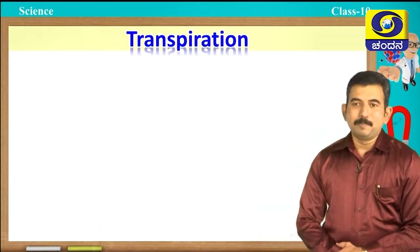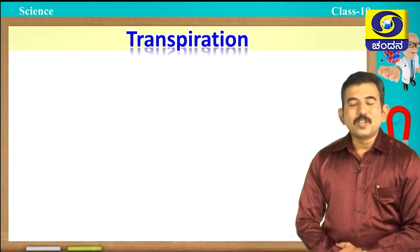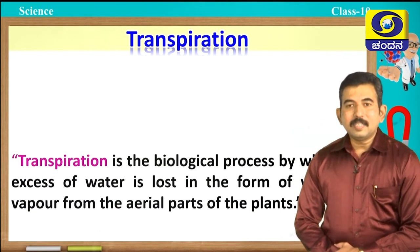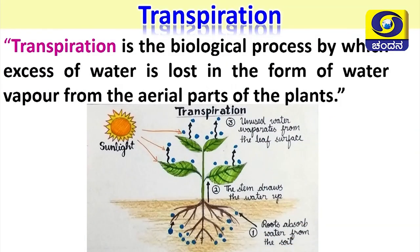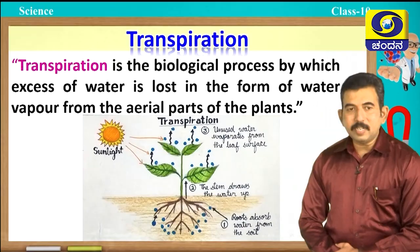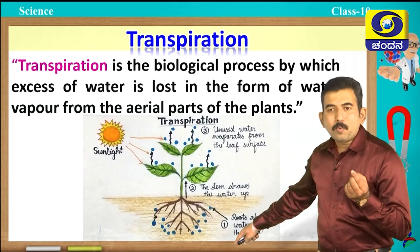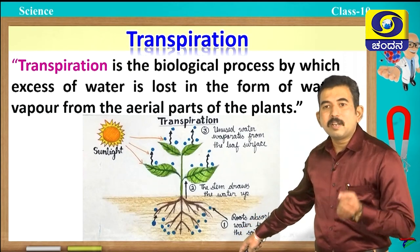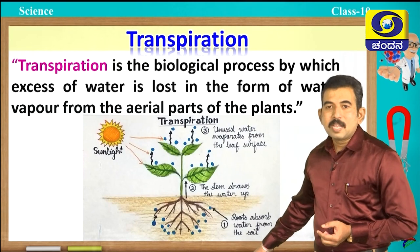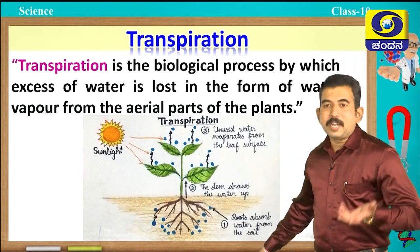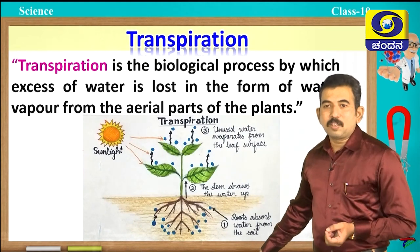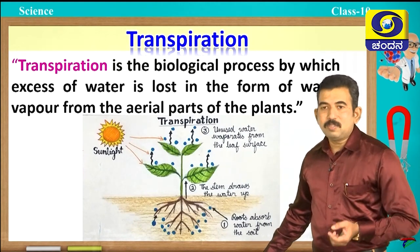What do you mean by transpiration? Transpiration is the biological process by which excess water is lost in the form of water vapour from the aerial parts of the plants. Plant roots absorb water and minerals from the soil. Plants require only a small percentage of water for photosynthesis; the remaining water evaporates through aerial parts such as shoots and leaves.